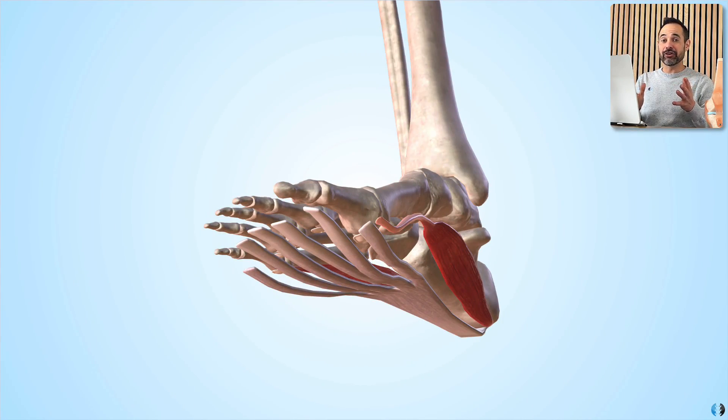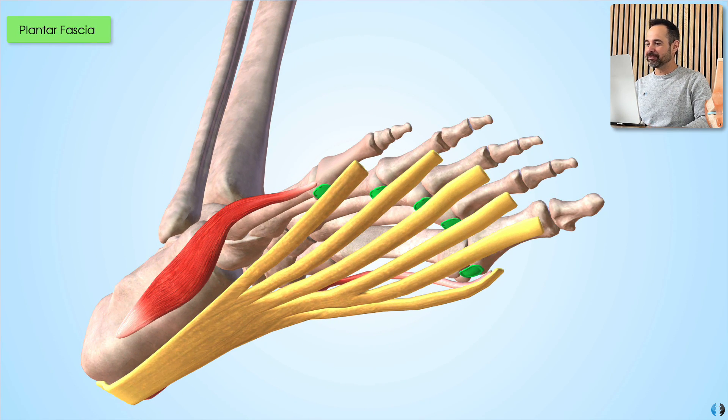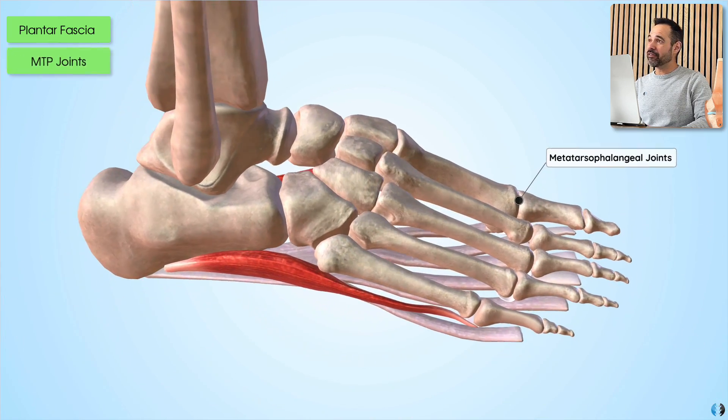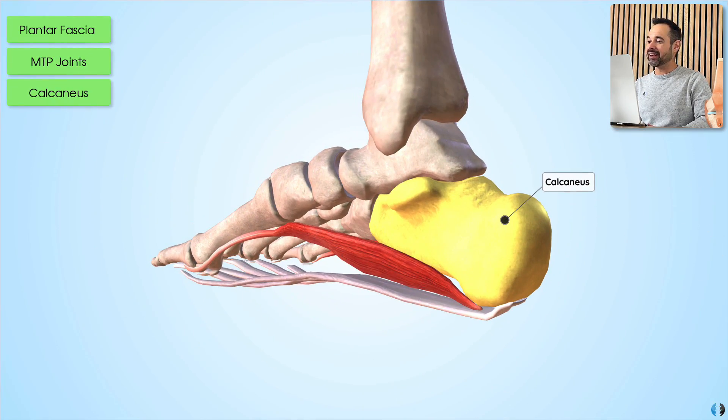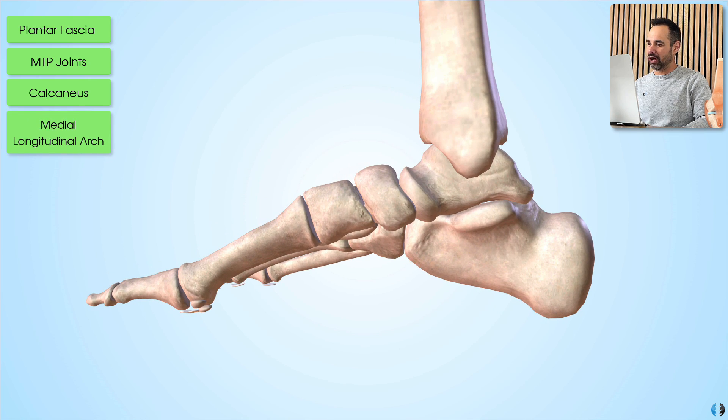So in this first part of the anatomy video, there are 4 key structures that we want to point out to you. These are the plantar fascia, the metatarsophalangeal joints, the calcaneus bone, and the medial longitudinal arch.